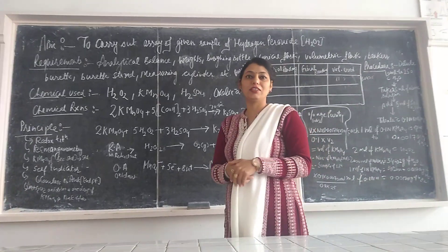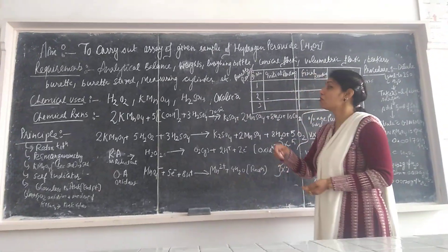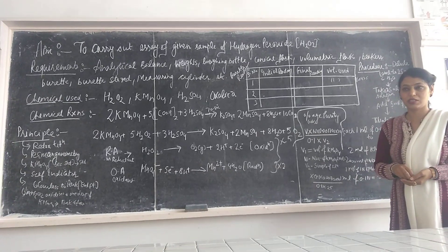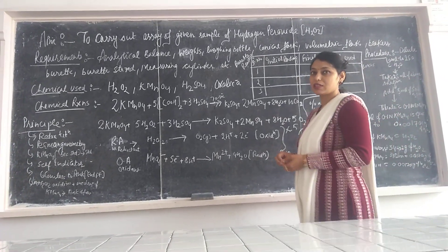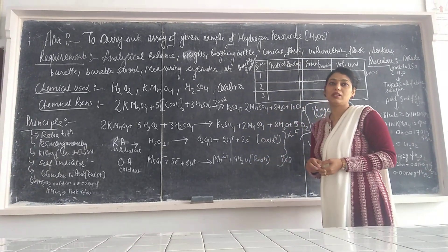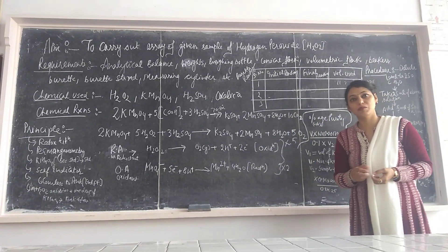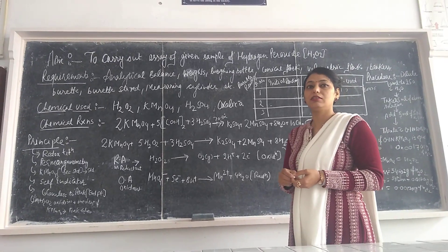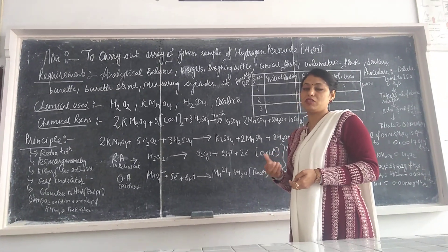Good morning students, myself Ravinder. Today we will discuss assay of given sample of hydrogen peroxide. The hydrogen peroxide acts as an antimicrobial agent. It will act as a deodorant as well as it can act as a germicide. Also it can be used for the whitening of teeth.